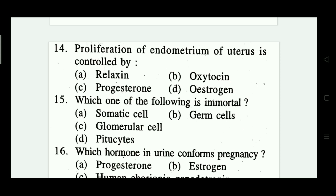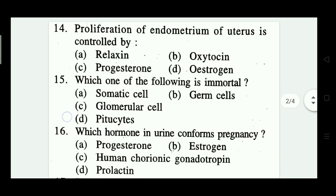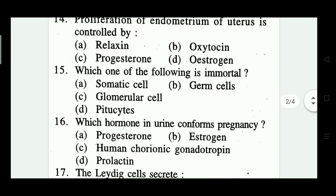Question number fifteen: which one of the following is immortal? Options: somatic cell, germ cell, glomerular cell, and oocytes. Which one is correct? Option B — germ cell is correct.